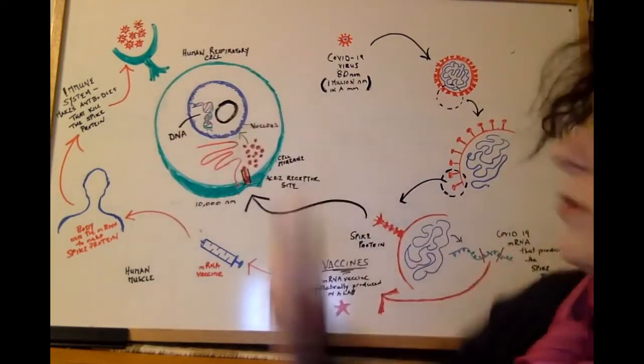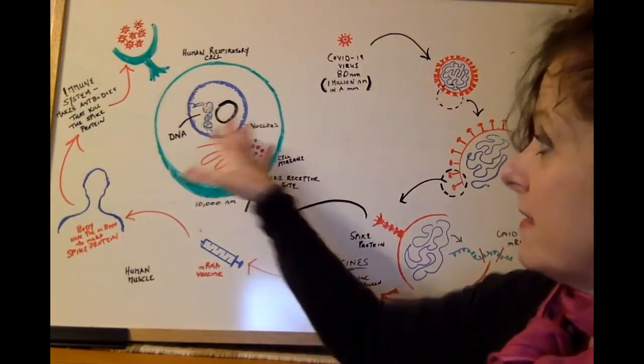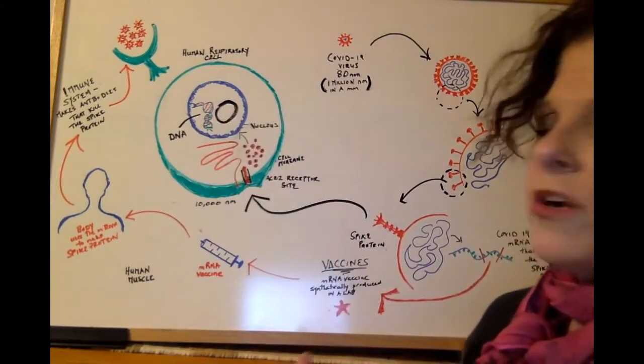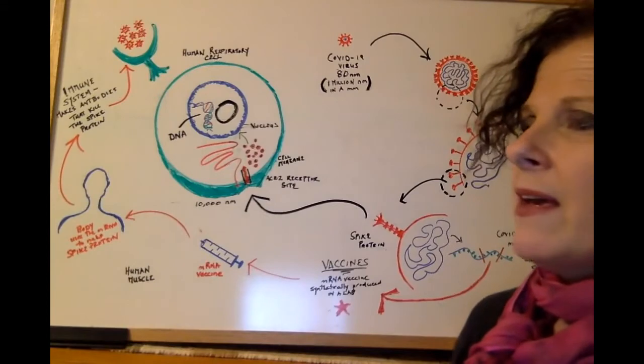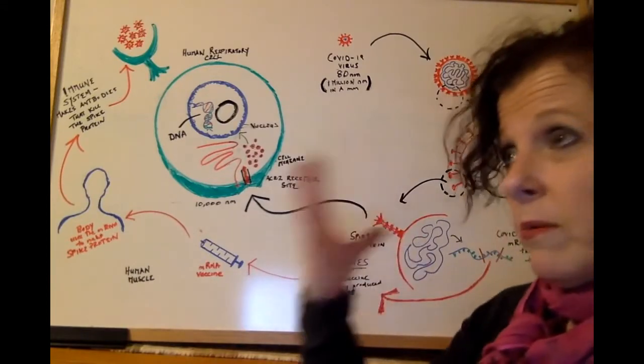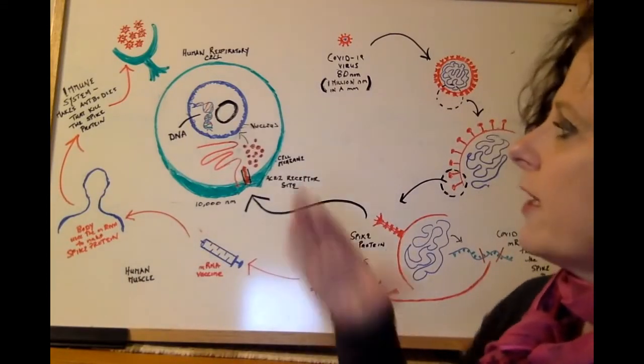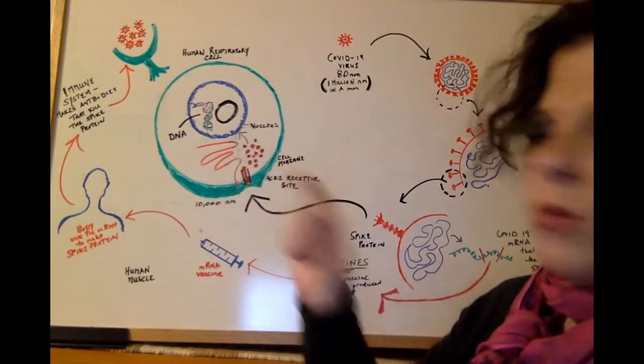Inside the cell, this again is very simplified, are organelles or organs. You have organs all throughout your body. Your heart is an organ. Your brain is an organ. Your lungs are an organ. Human cells have organelles.